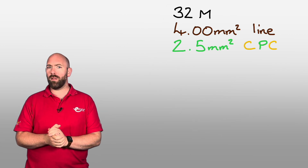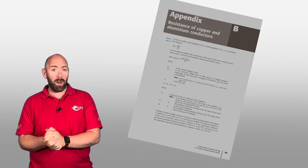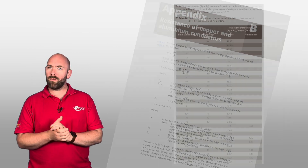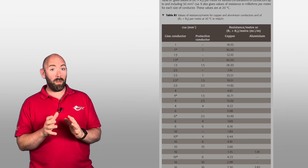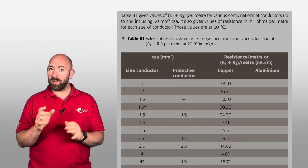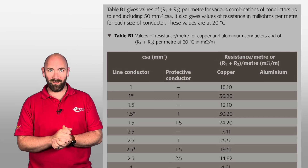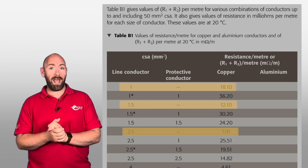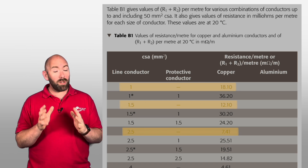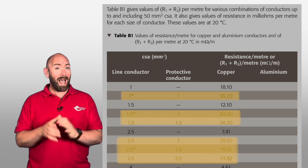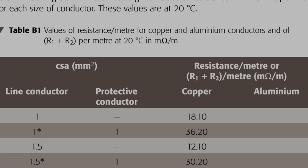Appendix B of Guidance Note 3 outlines the resistance of copper and aluminium conductors. Table B1 shows the values of resistance per metre for copper and aluminium conductors at 20 degrees Celsius. Using the table we can see the resistance of cable by cross-sectional area per metre. It also shows us the combined resistance of the line and protective conductor, as well as the line conductor by itself, and the values given are in milliohms per metre.